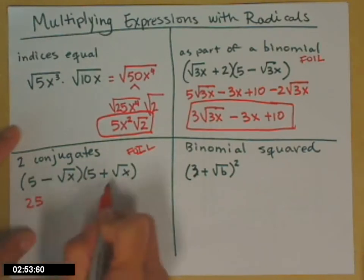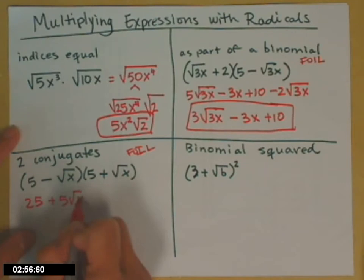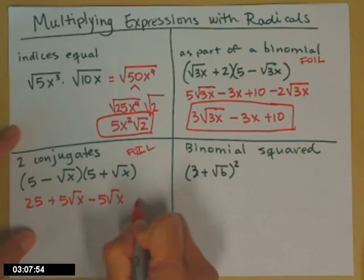5 times 5 is 25. 5 times square root of x, positive. So plus 5 square roots of x. Then I have 5 times the opposite of the square root of x. So that's going to be minus 5 square root of x. And then our last is square root of x times square root of x. That's just x and it's going to be minus.